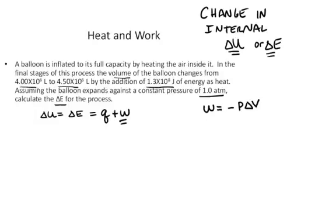That's what's going on here because we have an expansion from 4×10⁶ to 4.5×10⁶. The heat in this case is given to us by the addition of 1.3×10⁸ joules of heat. So Q is given to us. It's a positive sign because it's an addition, and it's 1.3×10⁸ joules.